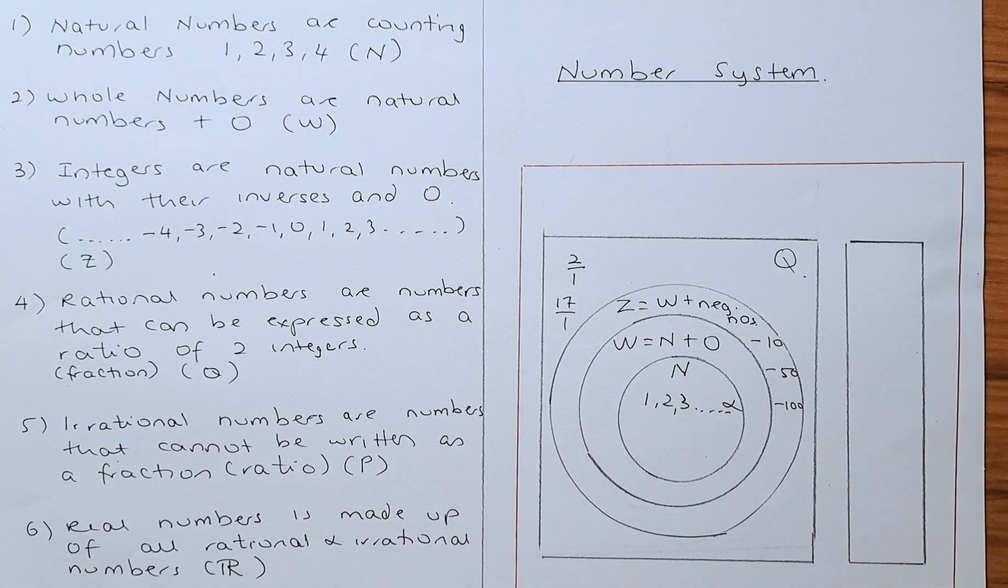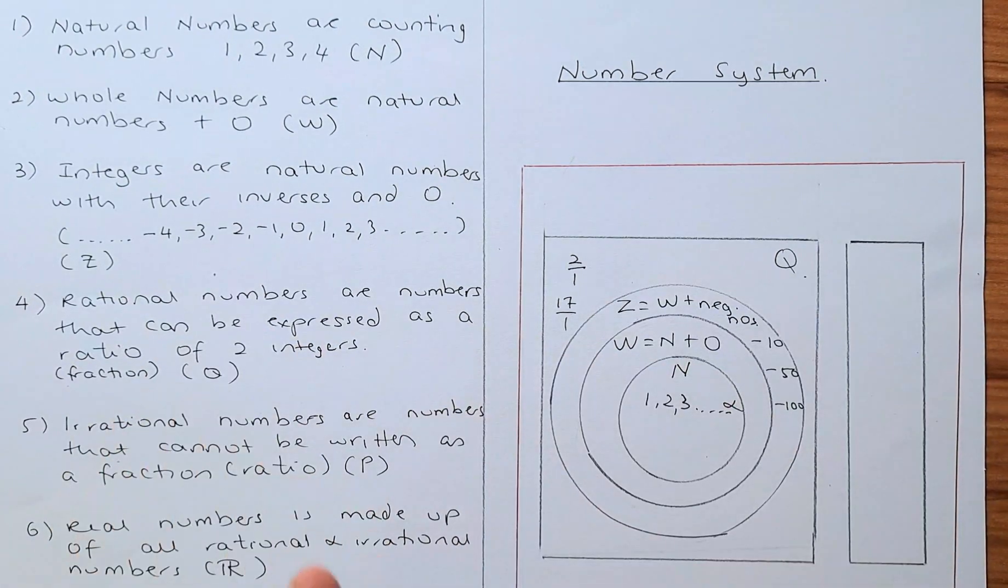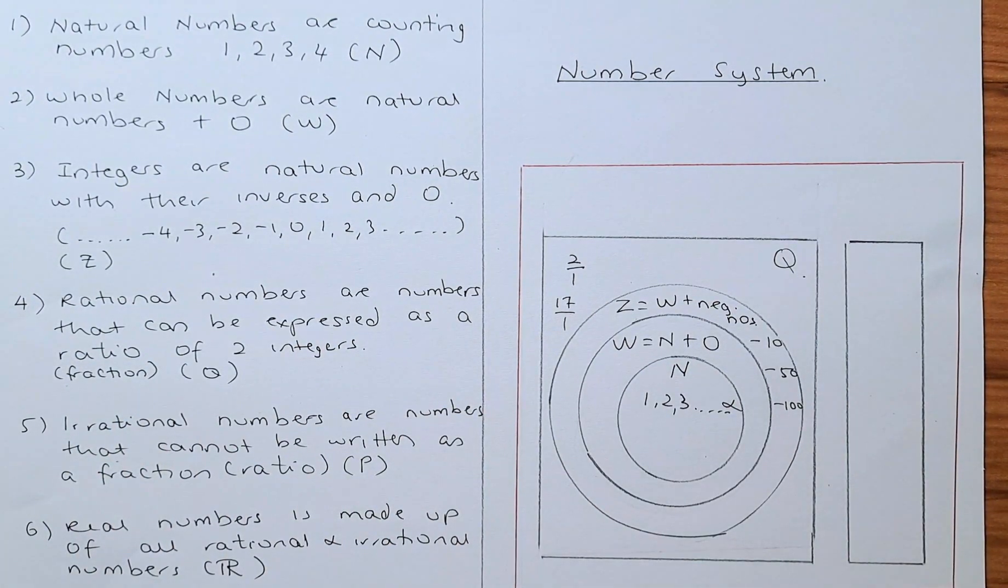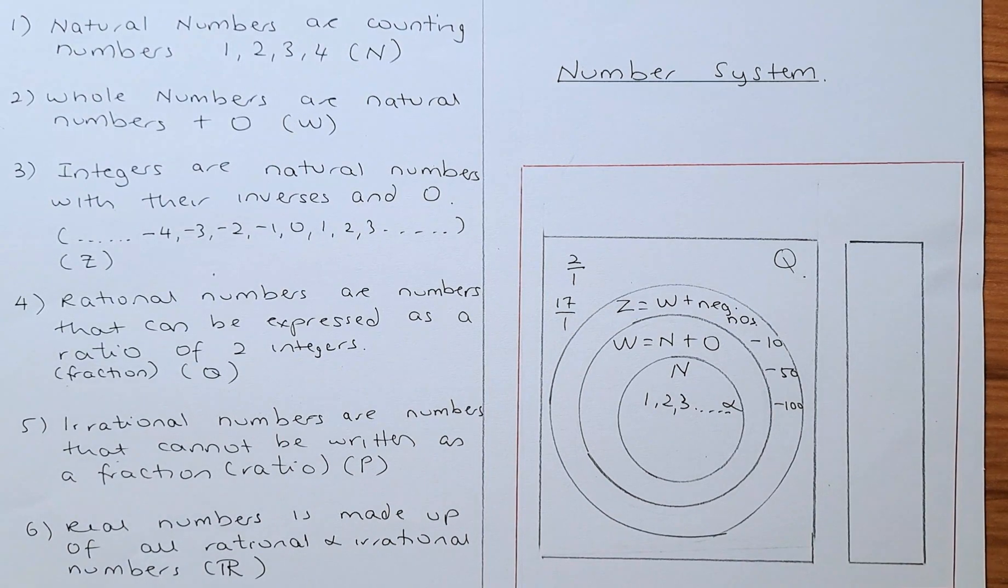Next we have another group of numbers which is separate from this group of numbers. They are called irrational numbers. Irrational numbers are numbers that cannot be written as a fraction or a ratio. For example...